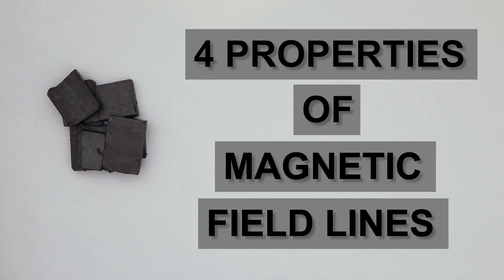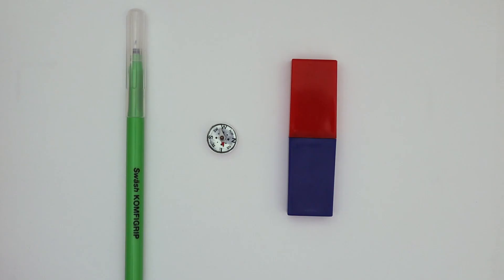To find out, let's begin by plotting some magnetic field lines. You need a pen, plotting compass, and a magnet.